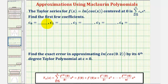Since we're trying to find c sub zero through c sub four, we'll have to find the first four derivatives of our function and then use the formula to find the series and then the degree four polynomial. The formula for the polynomial uses a finite number of terms, while the series would be infinite.